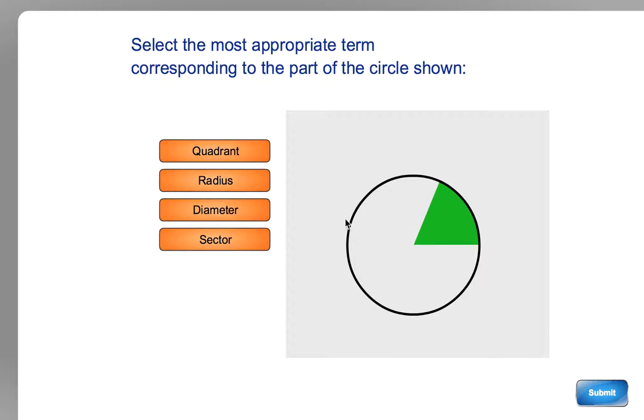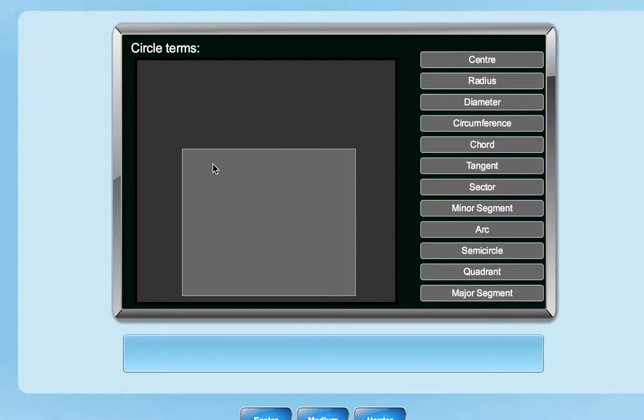And if you're not sure of what the parts are, just go to the help. In the help it gives you all the different parts of a circle and you can find out what they are.